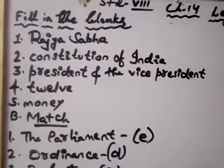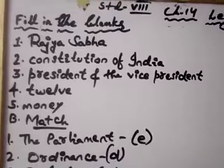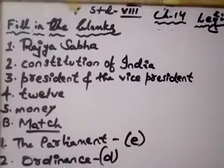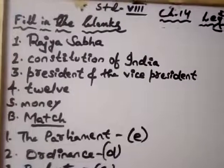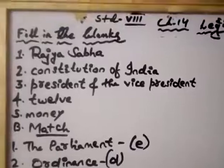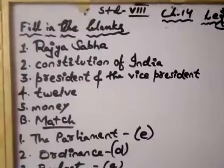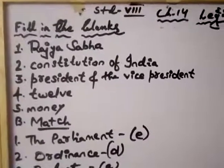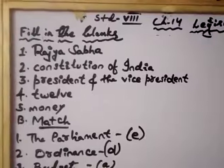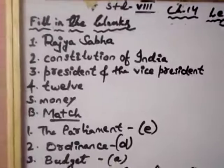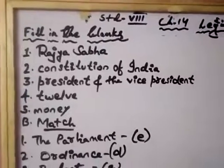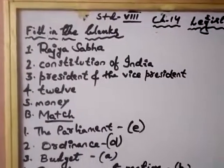The Rajya Sabha is the council of the states of the parliament. Second, the parliament can amend the constitution of India. Third, the parliament elects the president and the vice president of India. Number four, the Rajya Sabha has 12 nominated members. Number five, the Rajya Sabha cannot introduce the money bill.